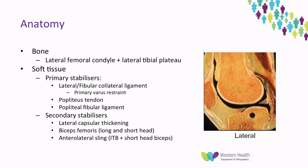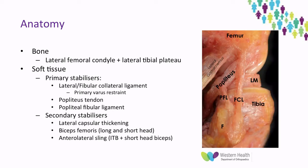In terms of the actual posterolateral corner itself, it's made up primarily of the fibular or lateral collateral ligament, which is the primary restraint of varus, as well as the popliteal tendon and the popliteal fibular ligament. Secondary stabilisers include the lateral capsular thickening, as well as dynamic stabilisers such as the biceps femoris and the anterolateral sling.